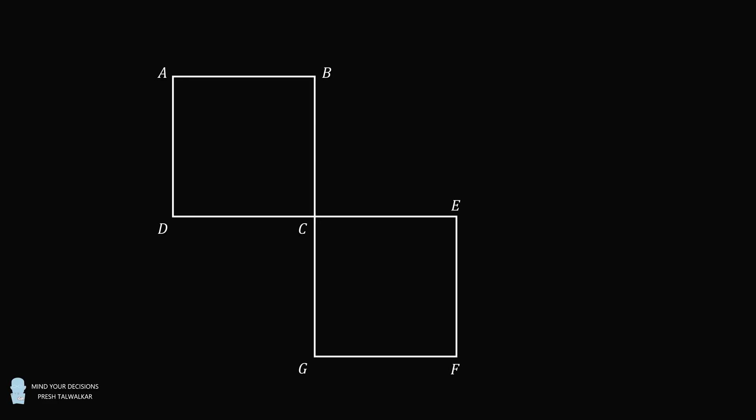To the right of this square, construct another identical square EHIF. Construct AI, which intersects BC at point J, and intersects CE at point K.